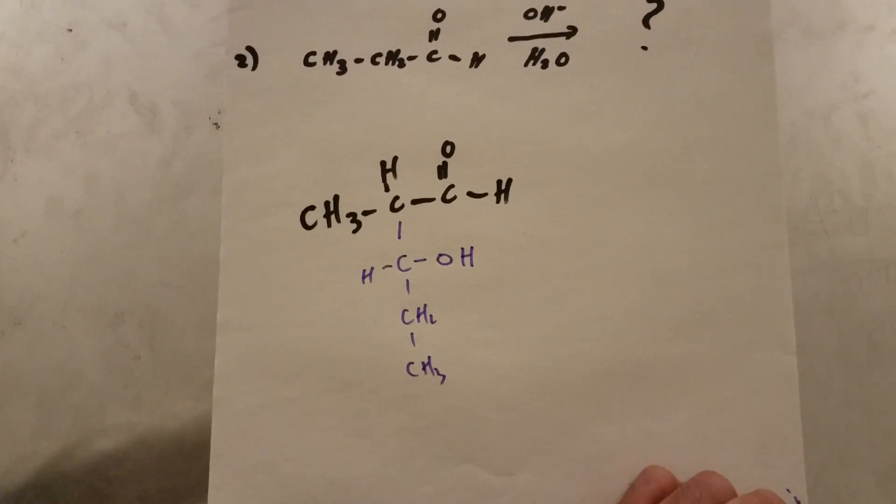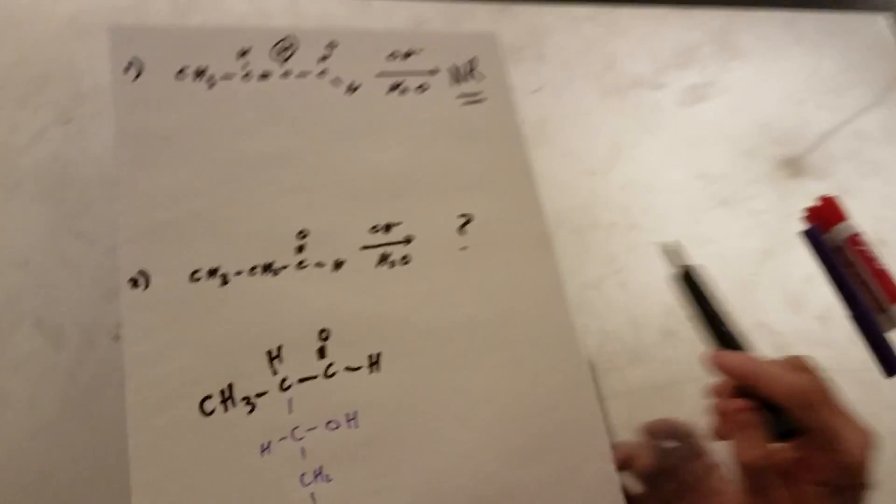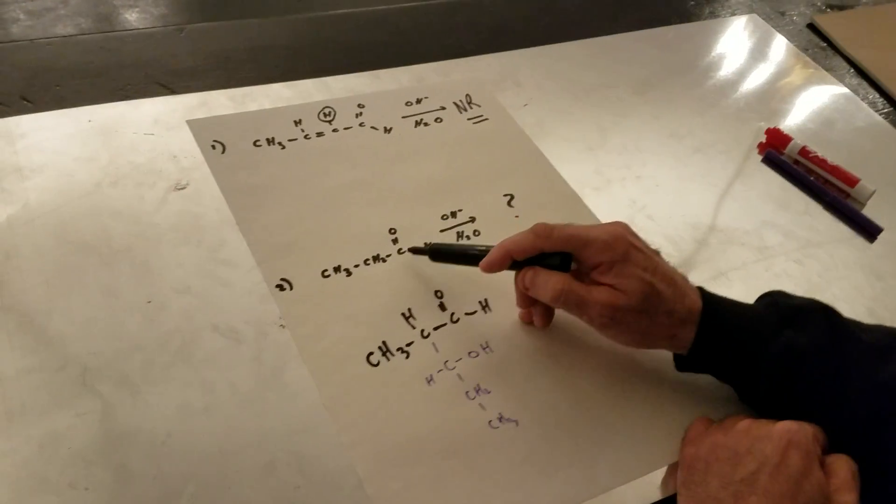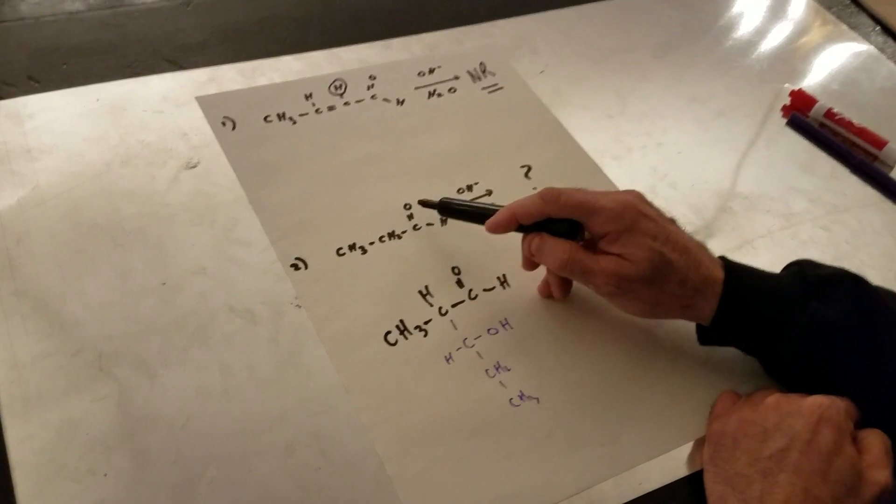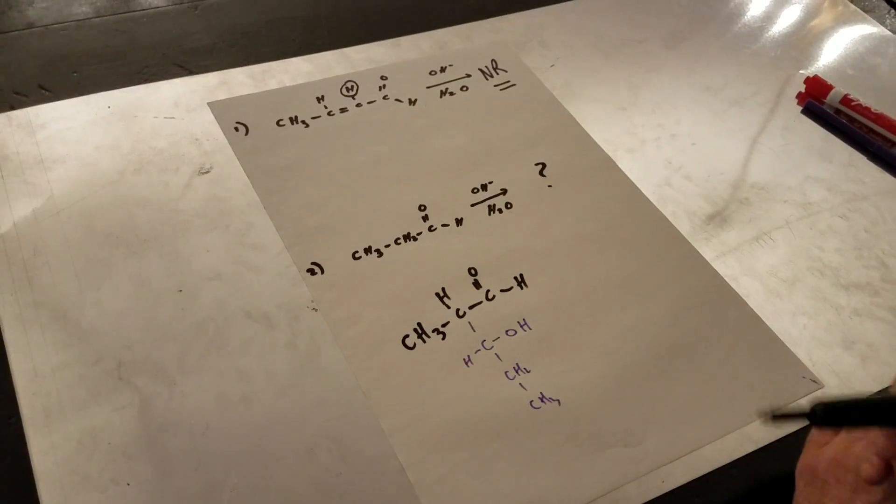So what you're going to do on the DAT exam at lightning speed is to remove the alpha hydrogen from the first one and then add it to the carbonyl carbon and then just hook them up like this.